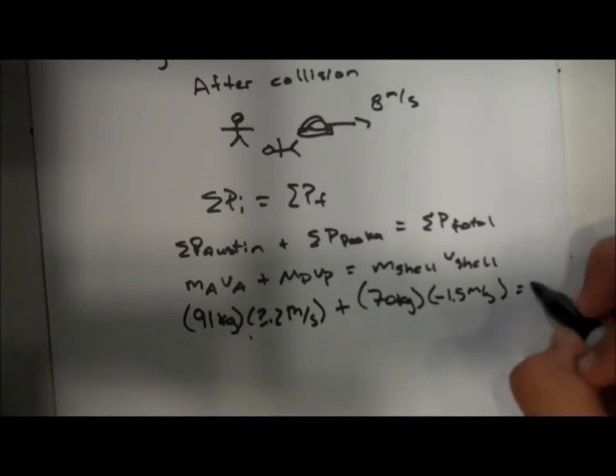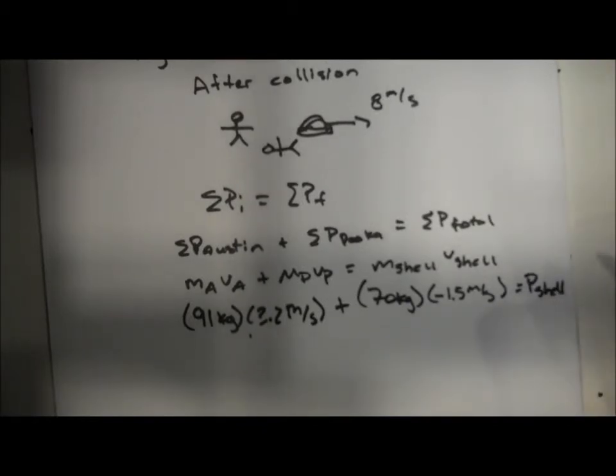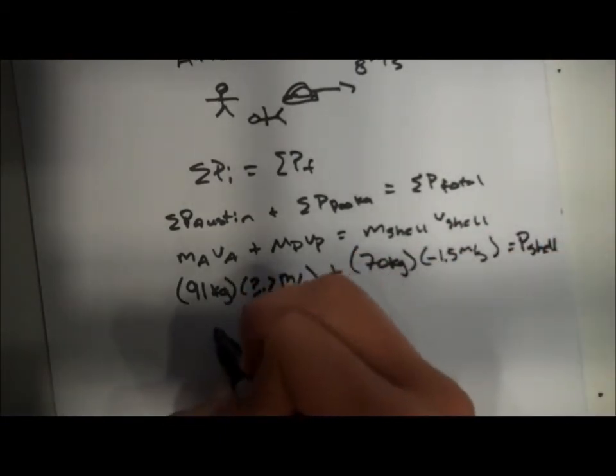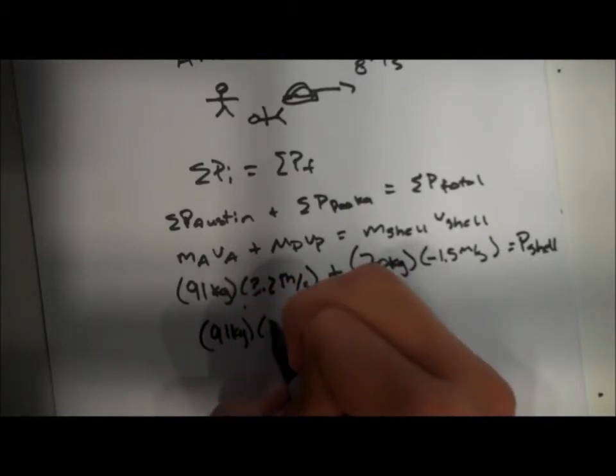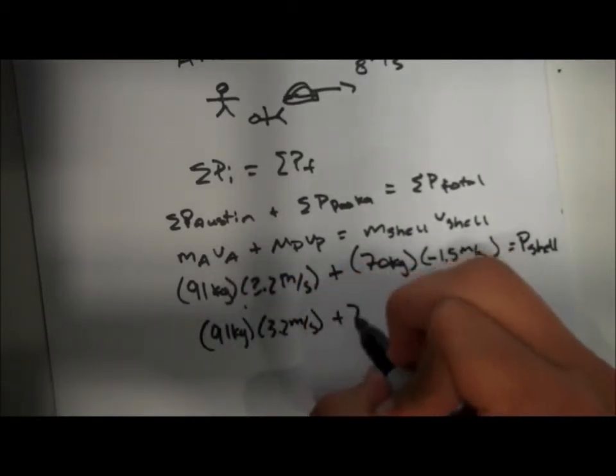And we're going to be having that equal the final, which is the mass of, we're trying to find the mass of the shell, so mass of the shell times its velocity. Now just to rewrite that to make that a little bit neater.